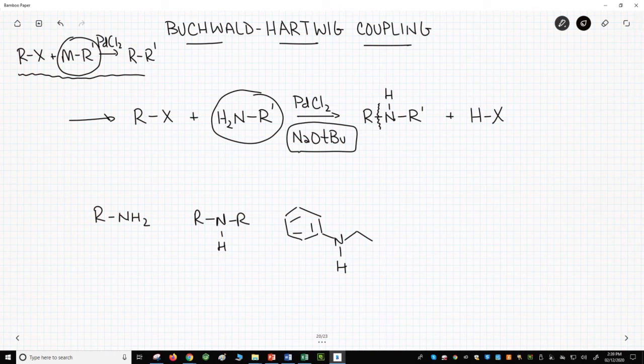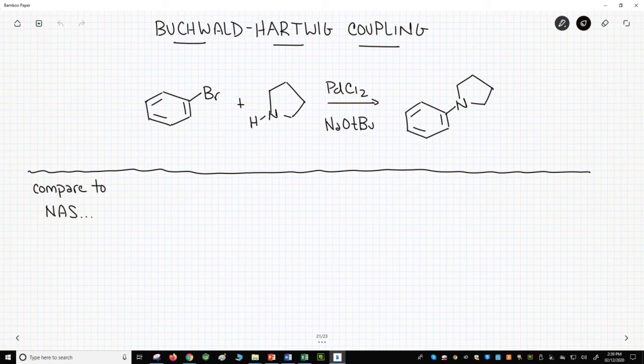Let's see an example of this reaction. Here's a sample reaction. We can react bromo benzene with an amine like this one. This is called pyrrolidine. Again, in all these reactions, we'll need a palladium catalyst. I just write PdCl2. For the catalyst, there are many different possible palladium catalysts. We also need our base, sodium t-butoxide.